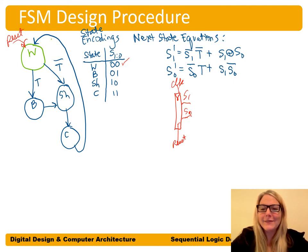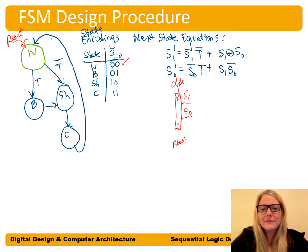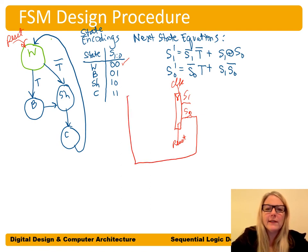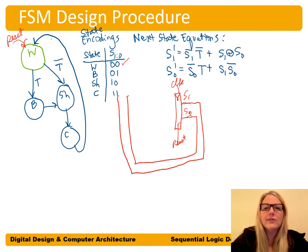On our state transition diagram, the reset input goes to a reset state — in this case the W state. When reset is asserted on the state register, it resets to state 00 (the W state). We always want to reset our system so it doesn't come up in an unknown state. For example, if we turn on an X-ray machine, we don't want it to start firing X-rays — we want it to come into a known state.